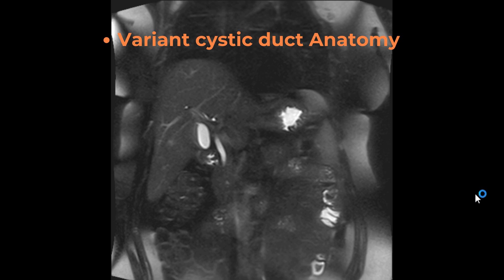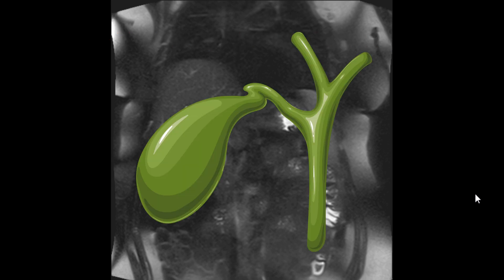Do you in your normal practice try to see where the cystic duct exactly inserts on the common hepatic duct? I always do. The reason is CBD starts below the insertion of cystic duct on common hepatic duct. This is extremely important — if we don't see where exactly the cystic duct is inserting, we can't say with confidence that what we measured is actually CBD. You can mistakenly measure common hepatic duct as CBD, and that's how the insertion site and any variant anatomy of the cystic duct becomes relevant.